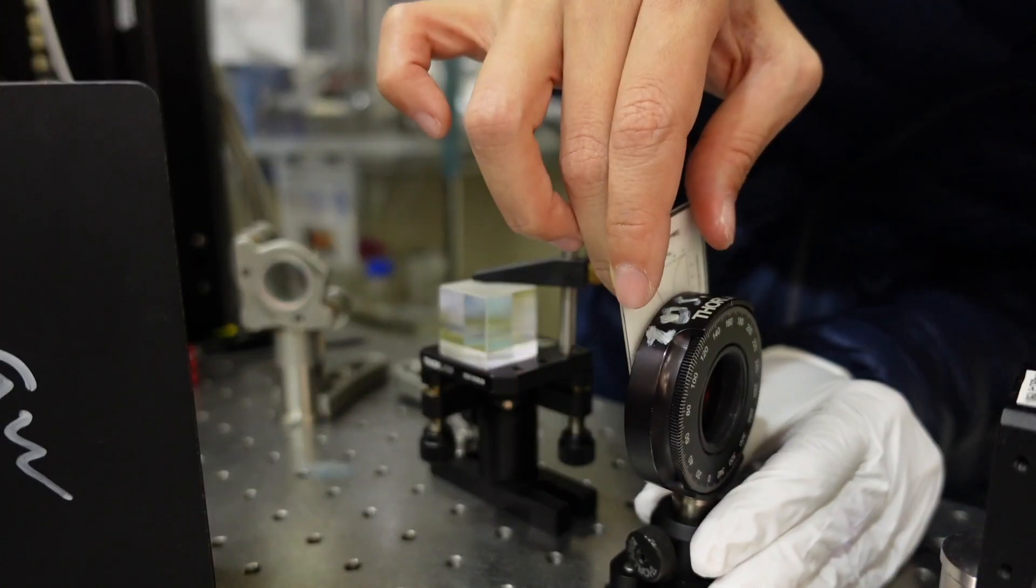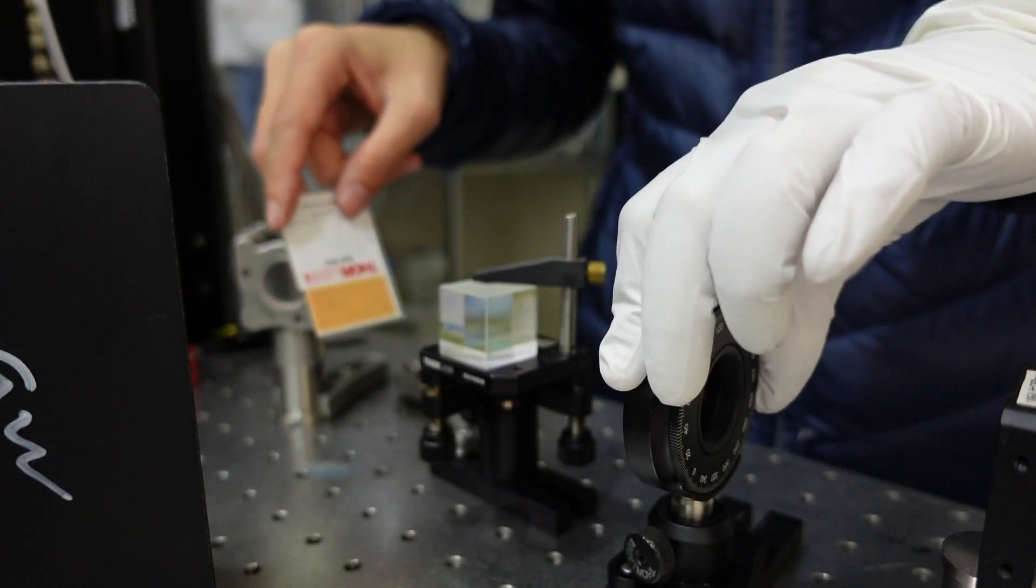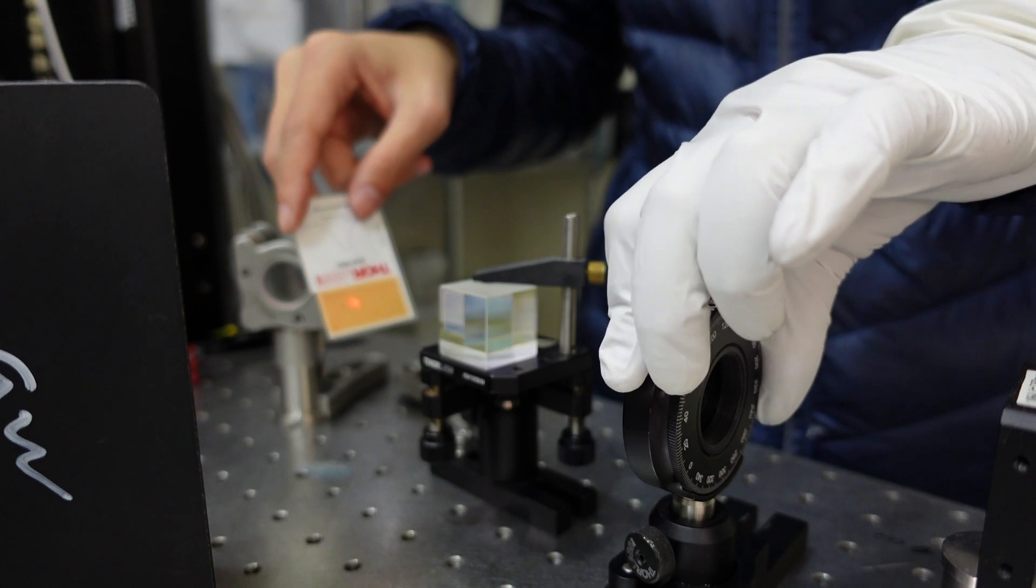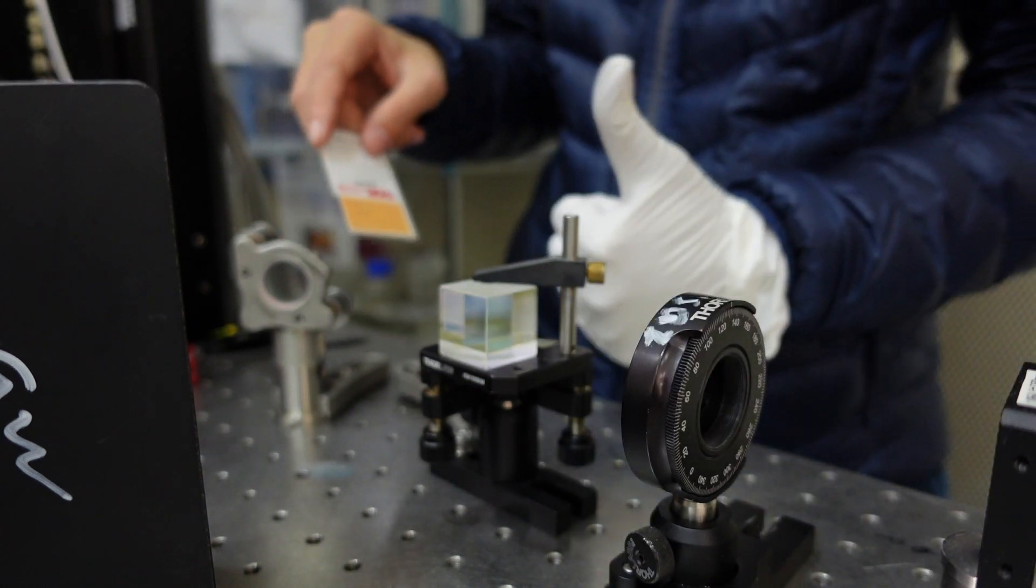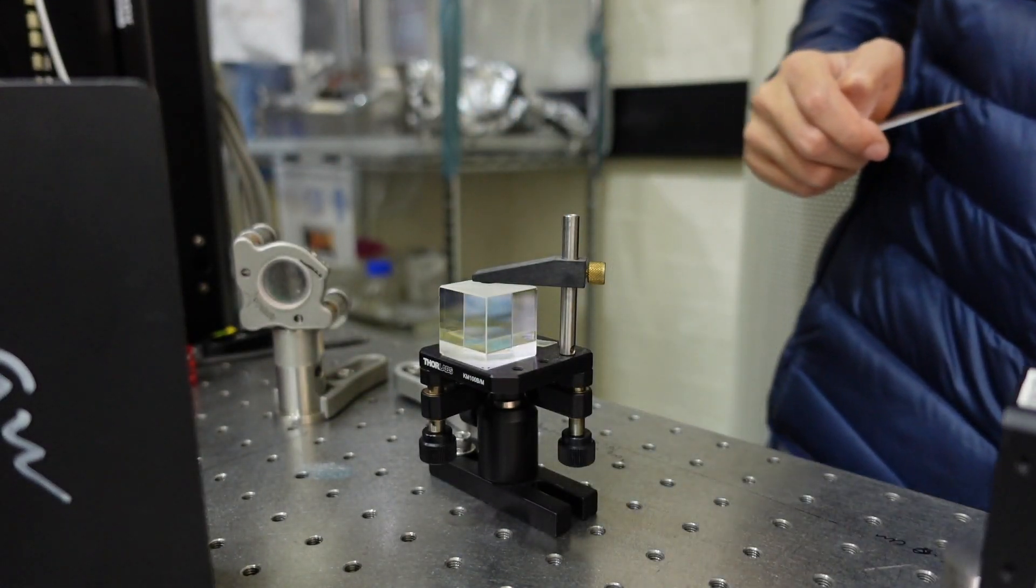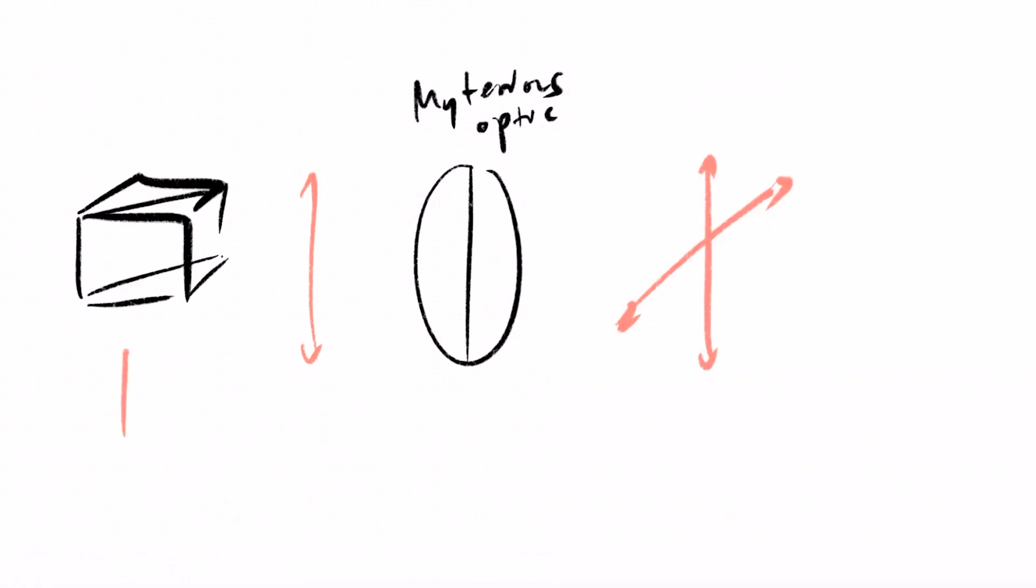If you have a half wave plate you should be able to rotate it around to get rid of either the transmitted or the reflected beam. In this case I was able to get rid of the transmitted beam, so I know this one is indeed a half wave plate because I was able to turn one polarization into the other completely and vice versa.